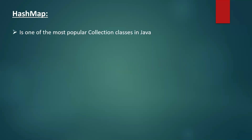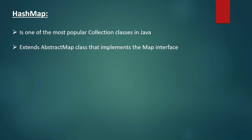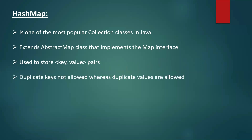What is a HashMap? HashMap is one of the most popular collection classes in Java. HashMap extends the abstract map class, and the abstract map class implements the map interface. HashMap is mainly used to store a key and an associated value — we usually call it a key-value pair. In HashMap, duplicate values are allowed but duplicate keys are not allowed. Also, the order of entries is not preserved, meaning there is no guarantee that we get entries back in the same insertion order.